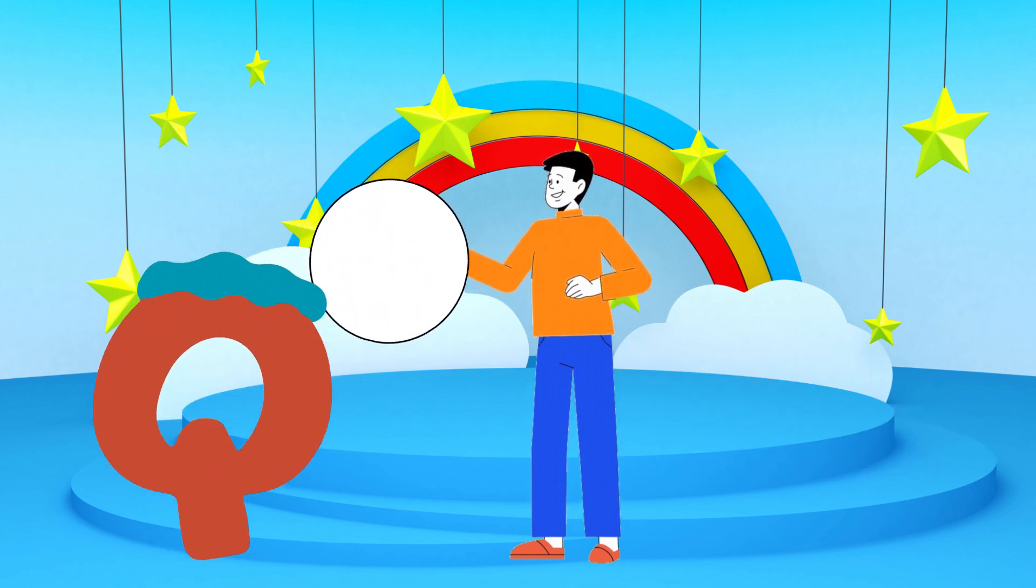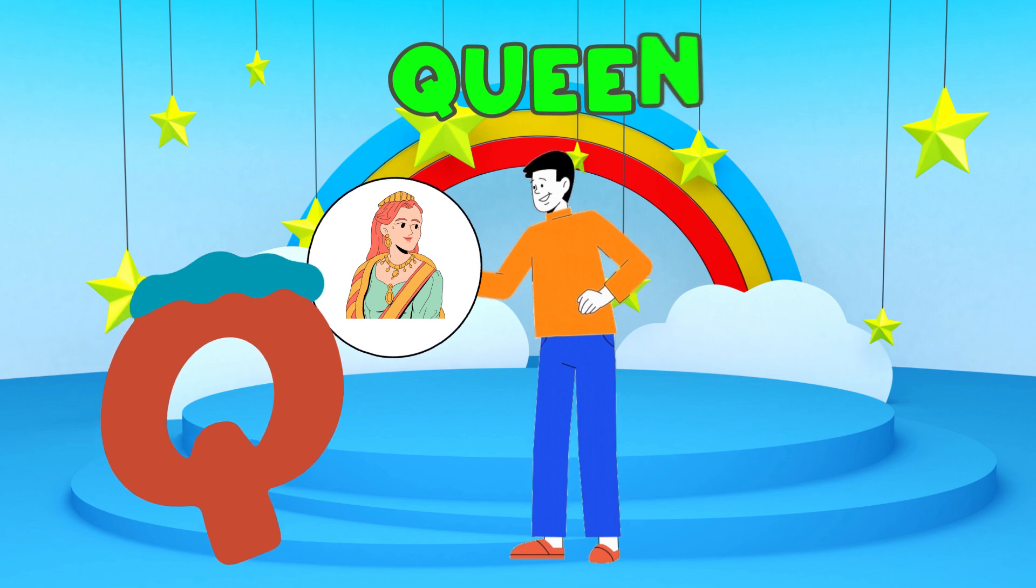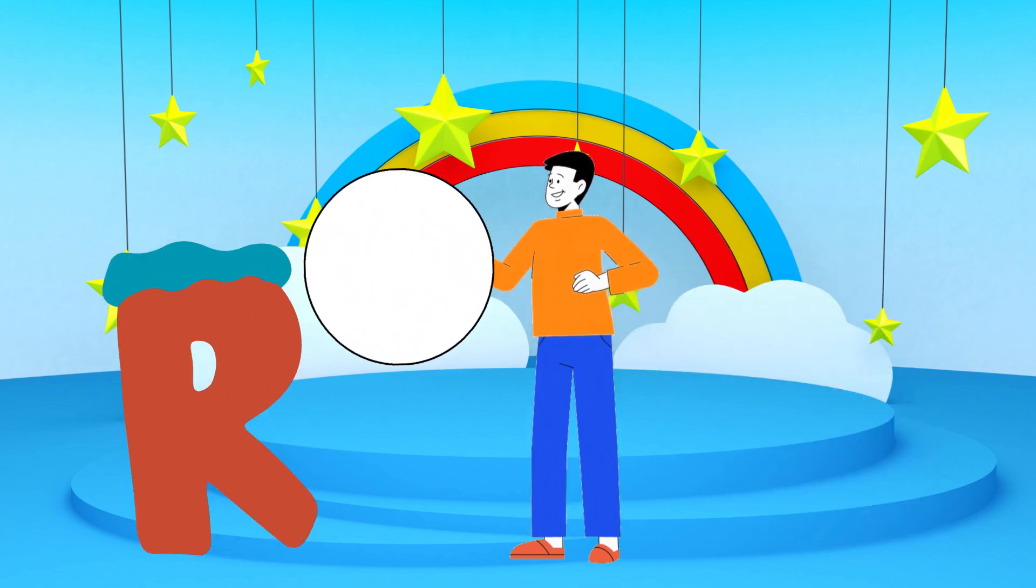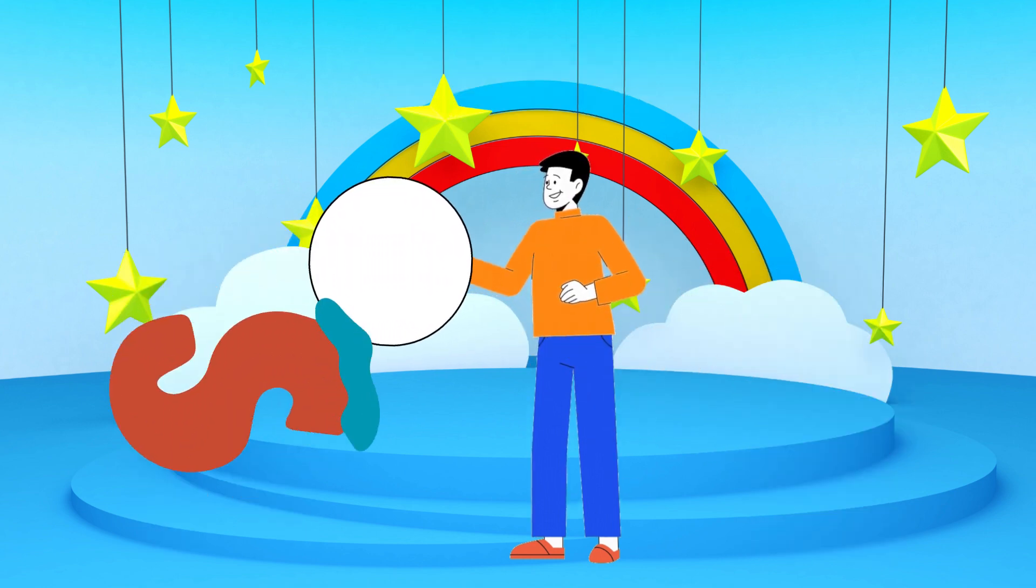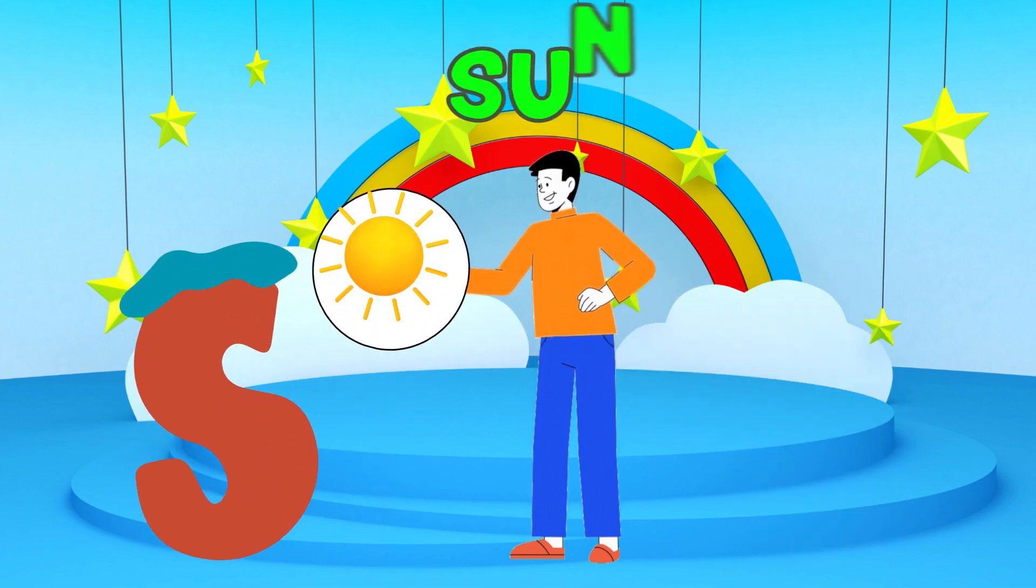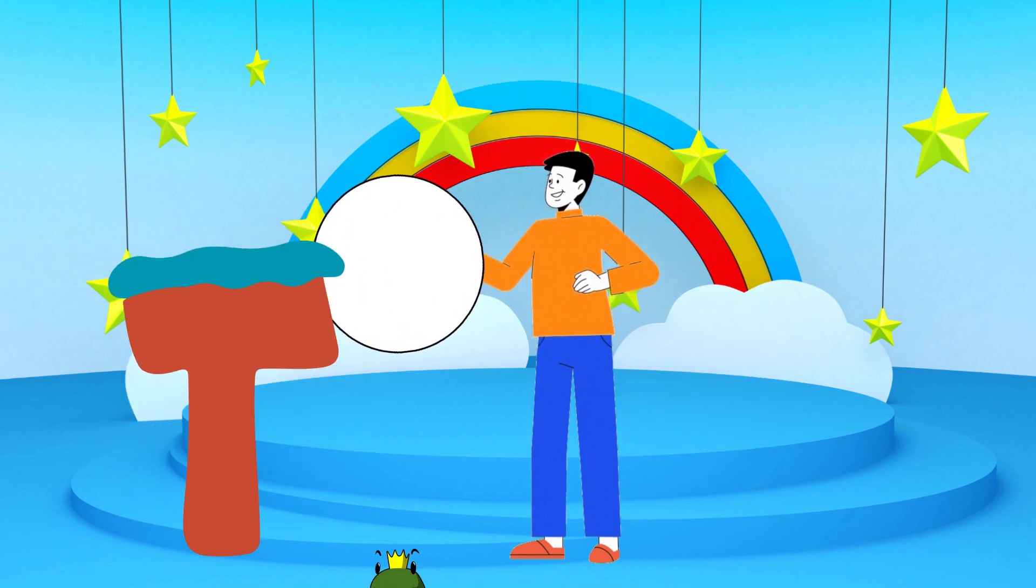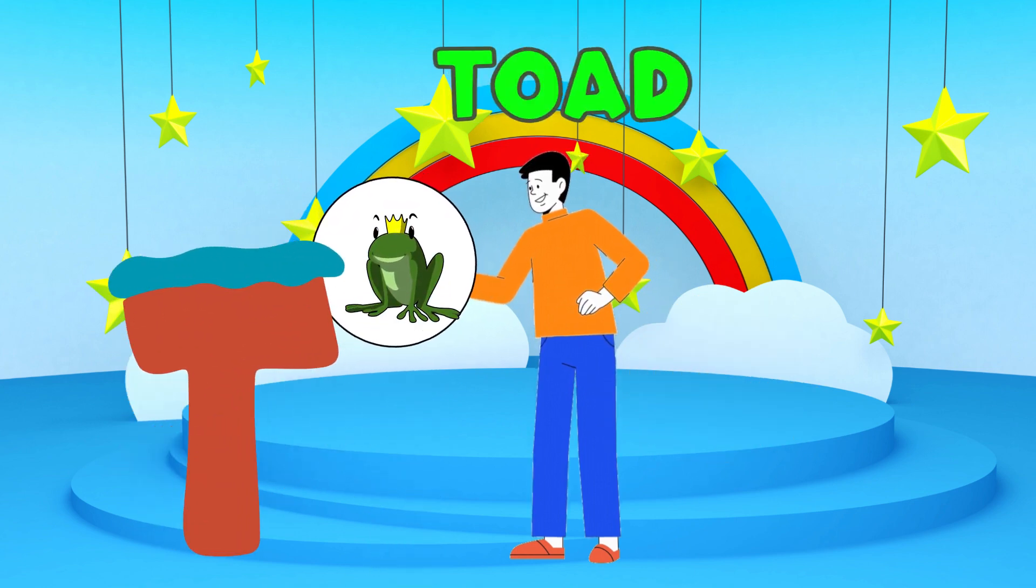Q is for queen, q-q-queen. R is for rabbit, r-r-rabbit. S is for sun, s-s-sun. T is for toad, t-t-toad.